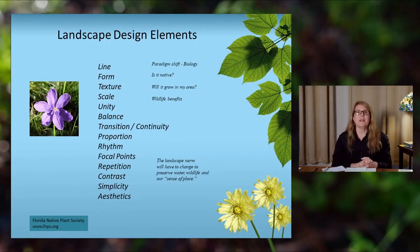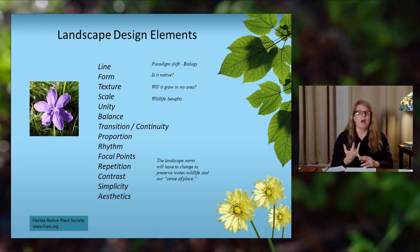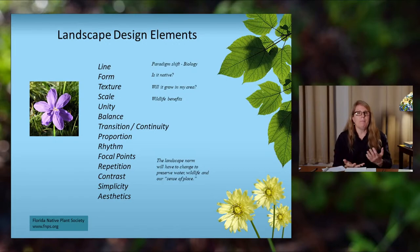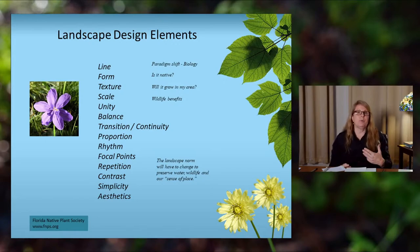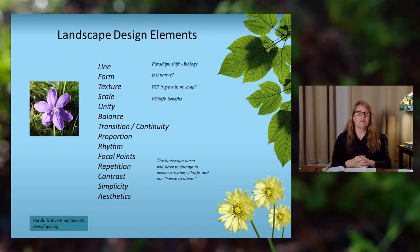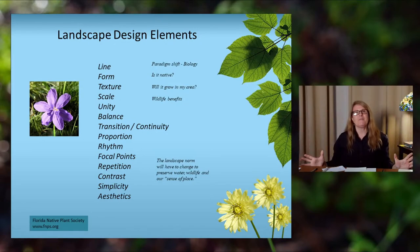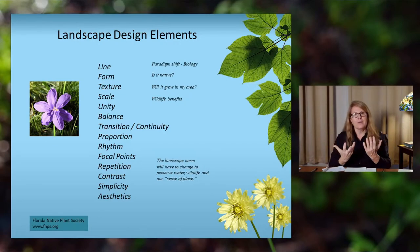Some landscape design elements we think about when designing your landscape are: line, form, texture, scale, unity, balance, transition and continuity, proportion, rhythm, focal points, repetition, contrast, simplicity, and aesthetics. That sounds like a lot, but it all comes together to create a harmonious landscape design. When talking about plant selection, find out what's available. My native plant nursery is Green Isle Gardens in Groveland, Central Florida — I go on their website, look at their plant list, find out what's available, and do my landscape design from there.